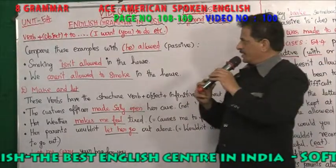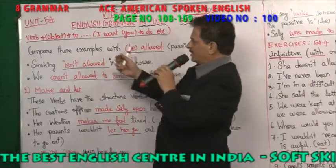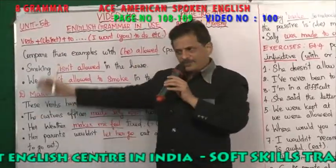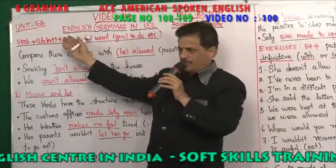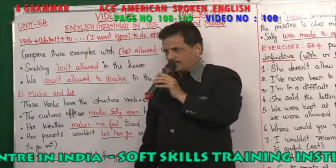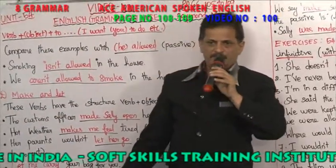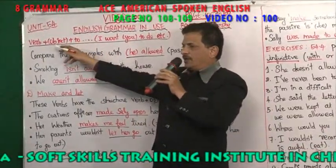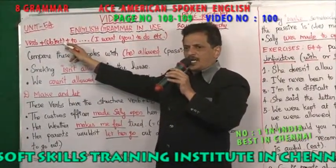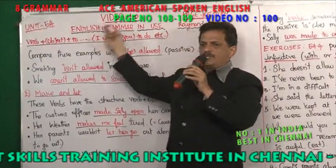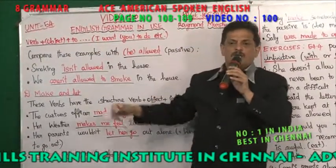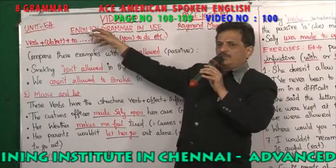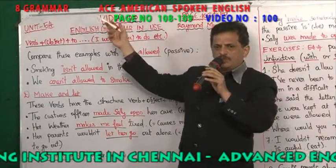Dear folks, what you're going to see is verb. After verb, obviously, an object comes. Sometimes object comes, sometimes object doesn't come. The structure is: verb plus object plus 'to' plus infinitive verb.